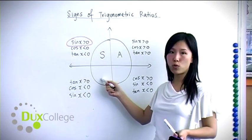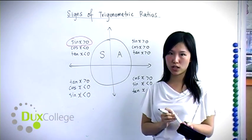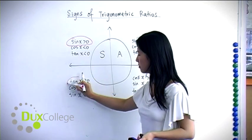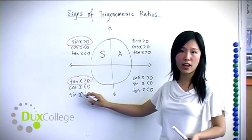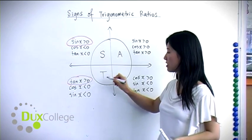In the third quadrant, only the tangent ratio is positive, and cosine and sine are both negative, so we label this as letter T.